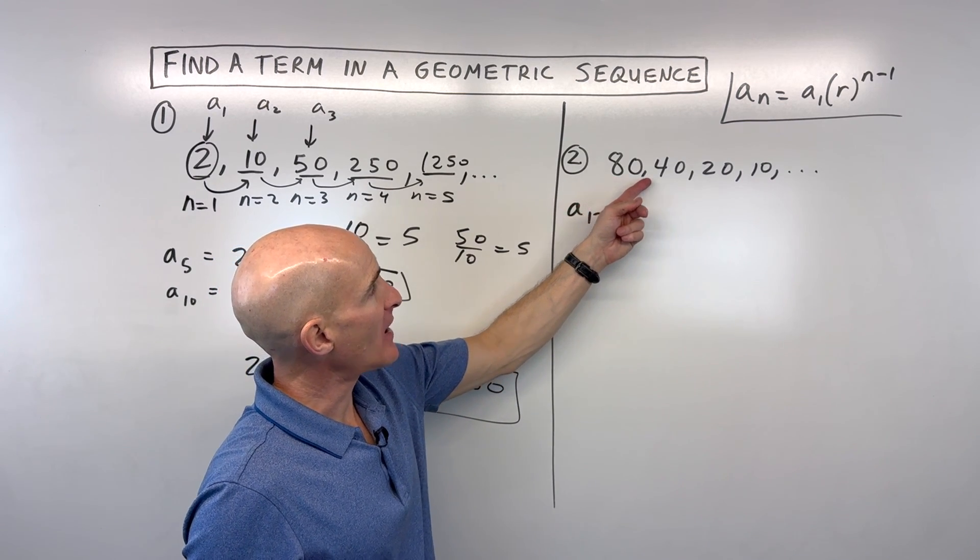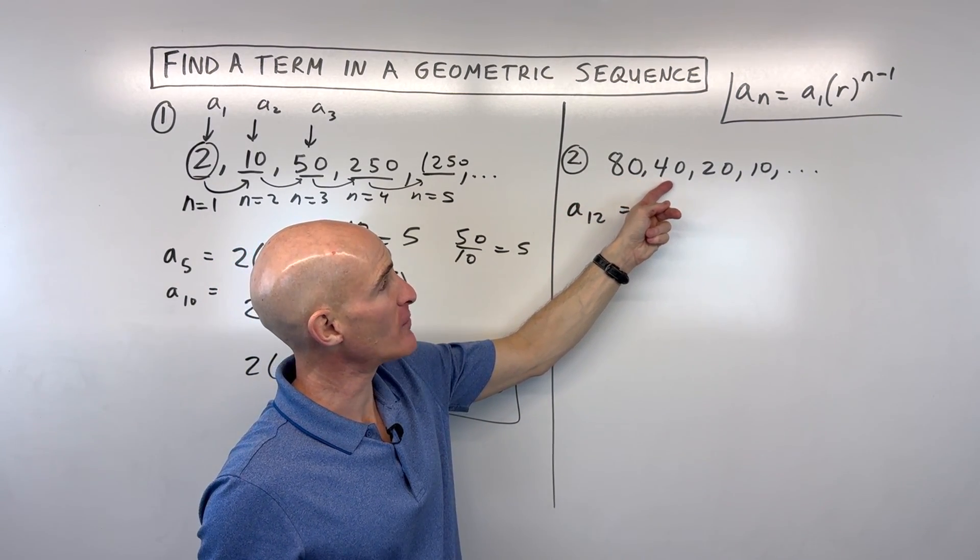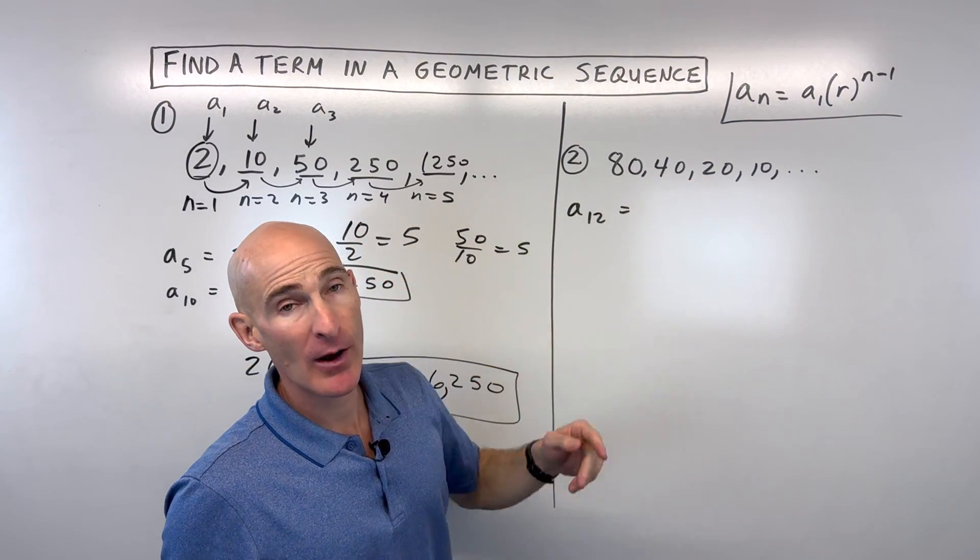Some students might say, well, oh, I'm subtracting 40. 80 minus 40 is 40. But you see how it doesn't continue? 40 minus 40 would be 0, not 20.